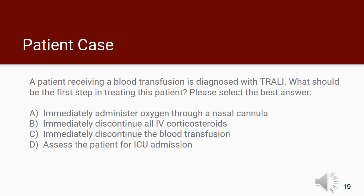Please provide the best possible answer to the following patient case question. A patient receiving a blood transfusion is diagnosed with TRALI. What should be the first step in treating this patient? A: Immediately administer oxygen through a nasal cannula. B: Immediately discontinue all IV corticosteroids. C: Immediately discontinue the blood transfusion. D: Assess the patient for ICU admission. The correct answer is C: Immediately discontinue the blood transfusion. This is always the first step in TRALI or any other serious infusion-related reaction.